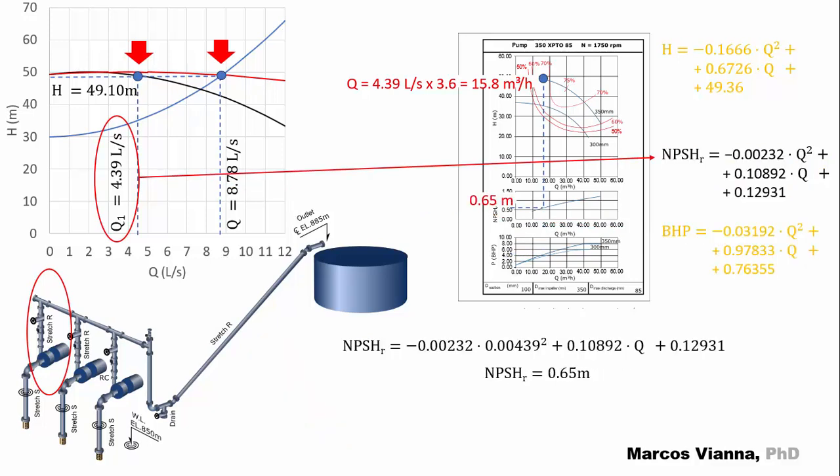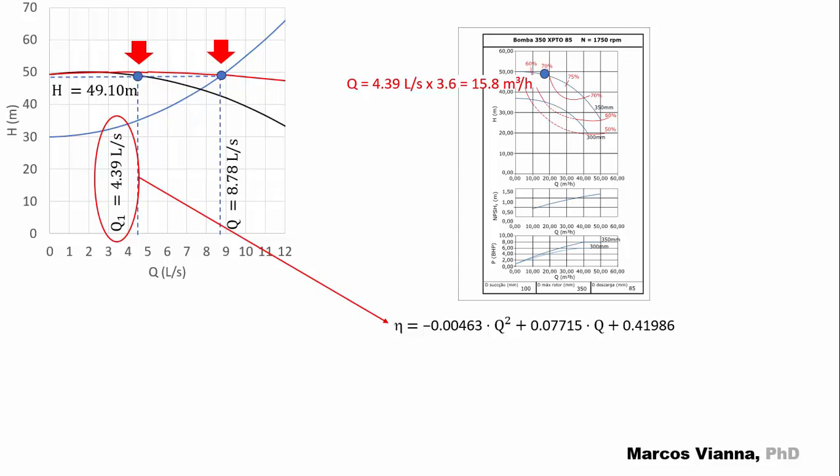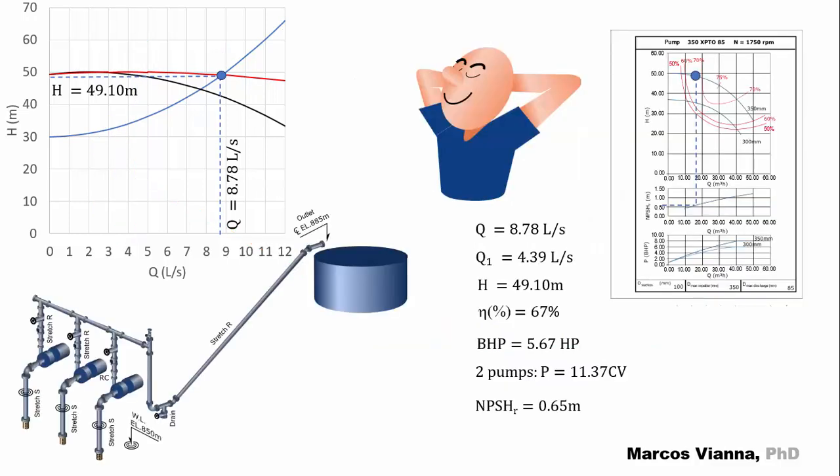And now, the required NPSH. It's just the same. We substitute the values and find 0.65 meters. I almost forgot! Here's the efficiency equation. As in the other cases, we substitute the values and find 0.67 or 67%. And so, we completed our task.